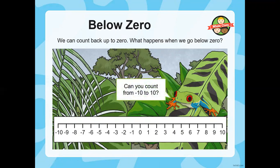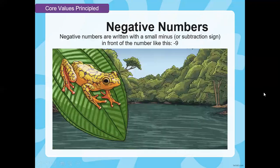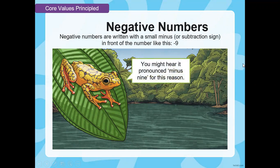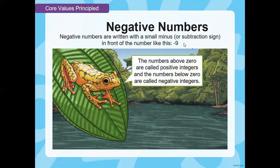You can count from minus 10 to 10. You can pause the video and count it backwards or forwards — it's up to you. You can even count without looking at a number line. Negative numbers are written with a small minus sign in front of the number, like minus 9, so you might hear it pronounced as 'minus 9'. In maths, we say 'negative 9'. The numbers above zero are called positive integers and the numbers below zero are called negative integers.